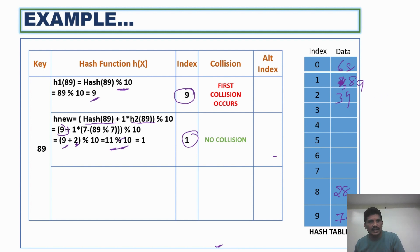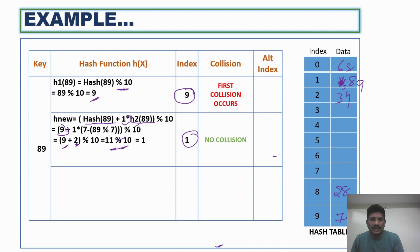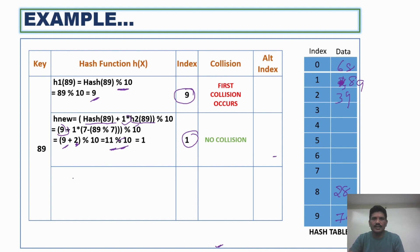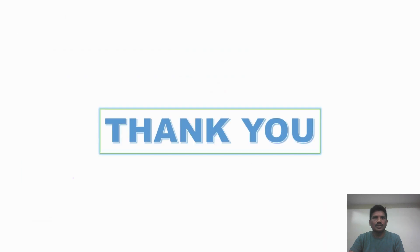If collision occurs again, i value becomes 2, and we continue searching. Like that, we can find a free empty slot in the hash table using the double hash function. It is a very efficient algorithm compared to linear probing or quadratic probing. If you have any doubt regarding double-hashing, please contact me through the comment box. Thank you all for watching.